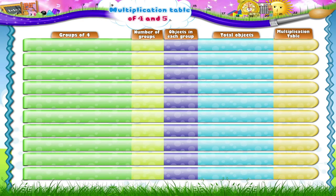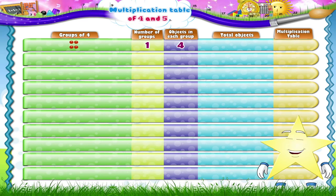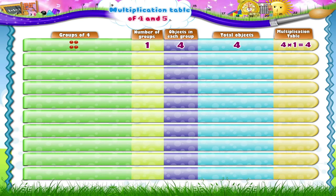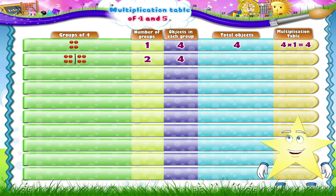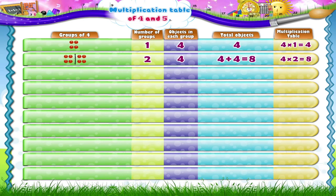Here is the first group of 4 beads. The total number of beads is now 4. Now, Starry, we shall add a second group of 4 beads. So, 4 beads taken 2 times make a total of 8 beads. Let us now separate 4 beads at a time, Starry. So, 4 beads taken 3 times make a total of 12 beads.